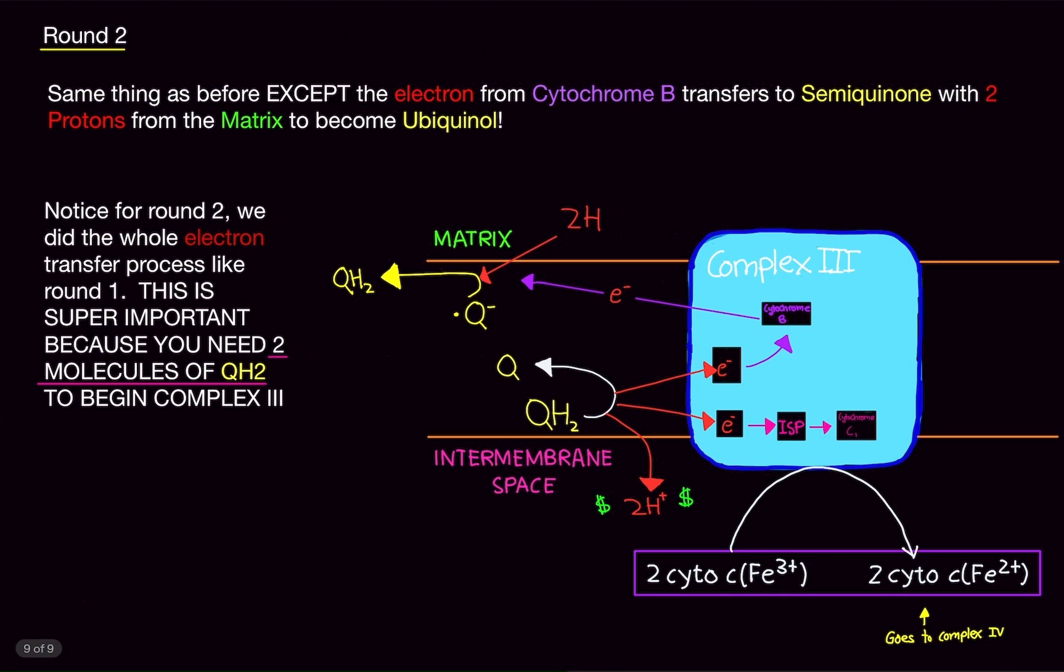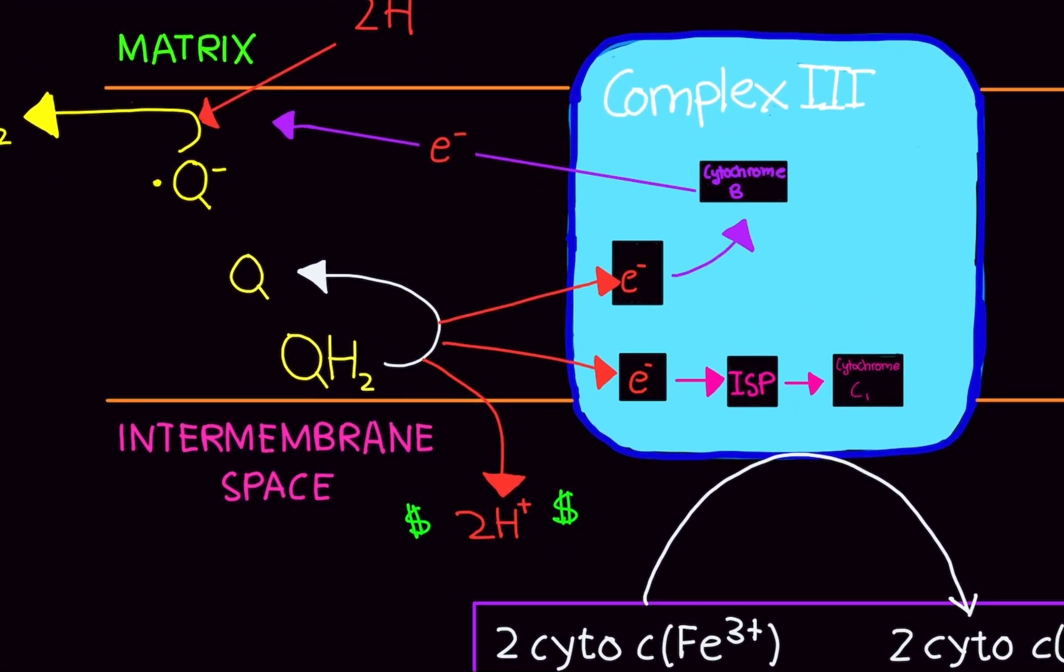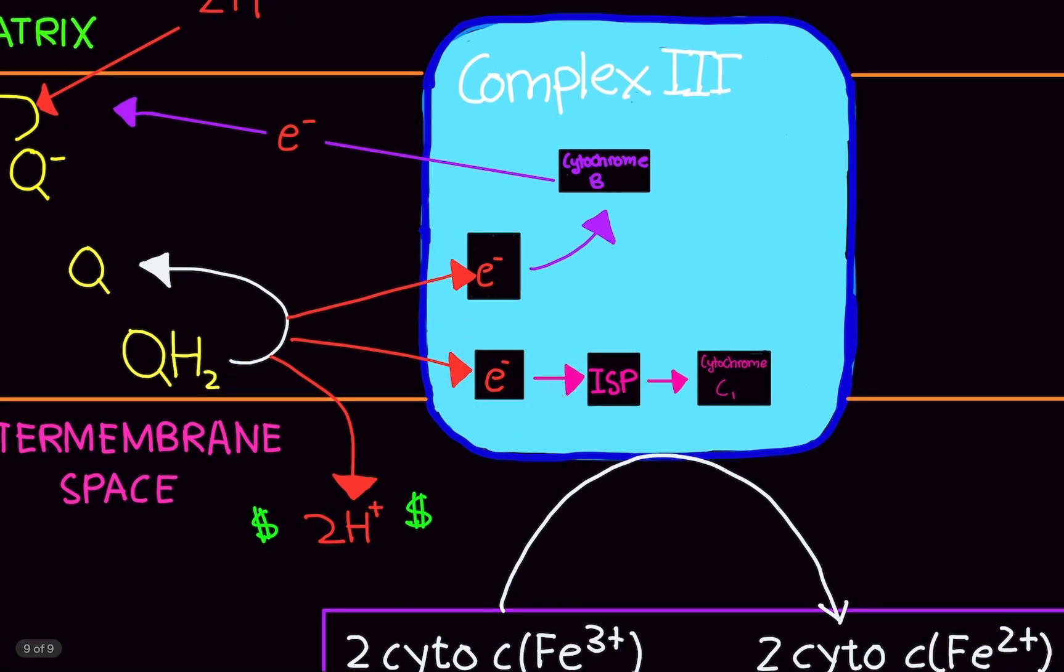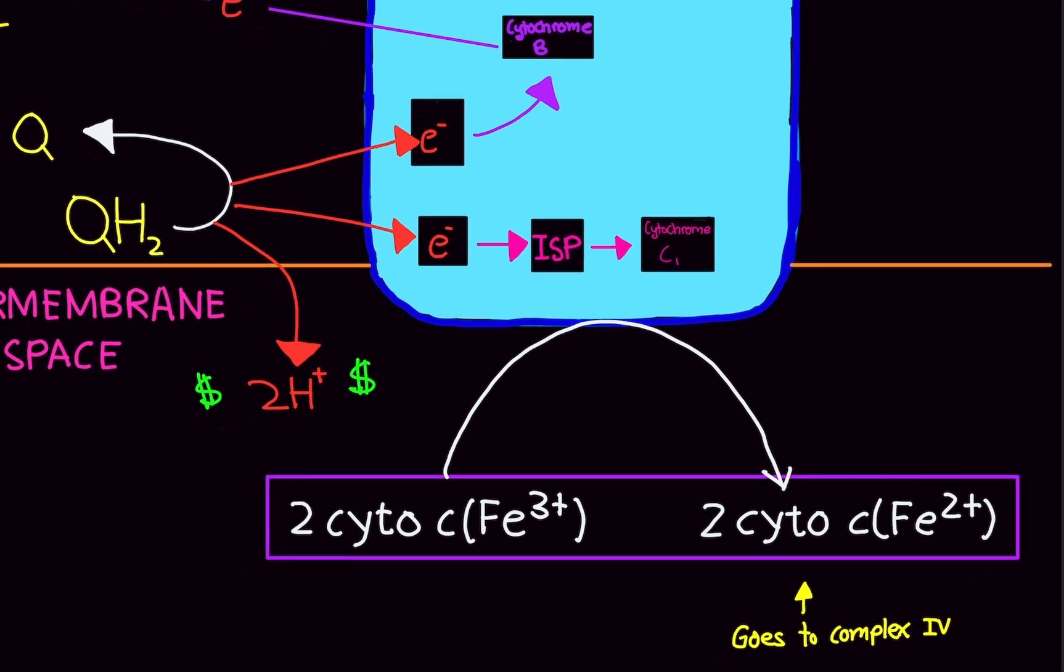Round two. Now, round two is exactly the same thing. But here's what happens. So, we have the ubiquinone, and it donates its electron to ISP, the iron sulfur protein. And then to cytochrome C1. And then it does the same thing. The other electron goes to cytochrome B.